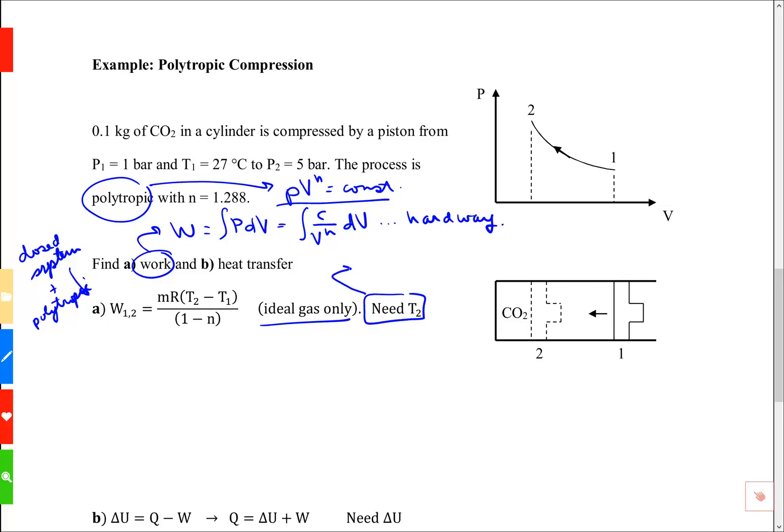We're going to use a relationship for the temperature that comes from here. If it's polytropic, we could write P1 V1^n as a constant, that constant could be P2 V2^n. If we combine that with the gas law where the volume is MRT divided by P,